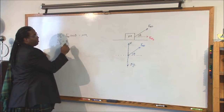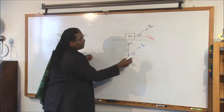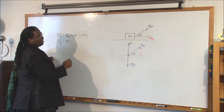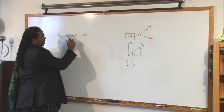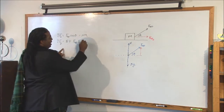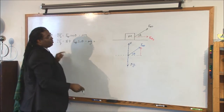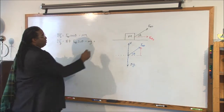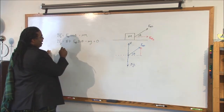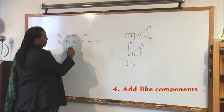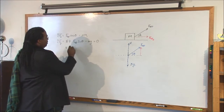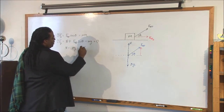The normal force is pointing up, so that's positive. For the applied force, we want the y component of this vector, which is plus F applied times sine theta, since it's pointing up. Then minus mg. Since we're assuming the block is not leaving the table or falling through it, this equals zero — it's not accelerating off or through the table. Solving, the normal force equals mg minus F applied times sine theta.